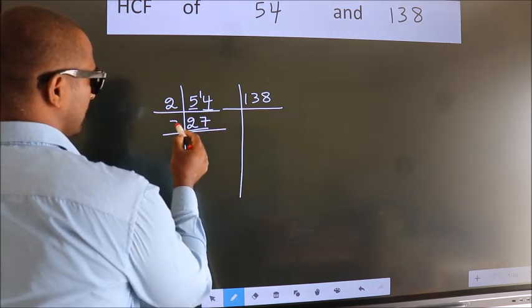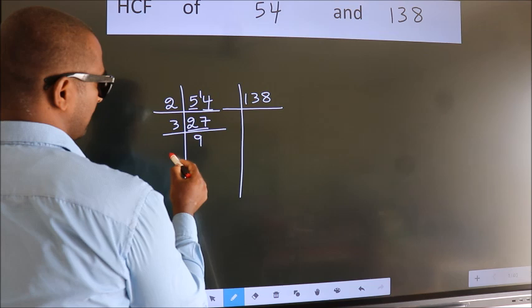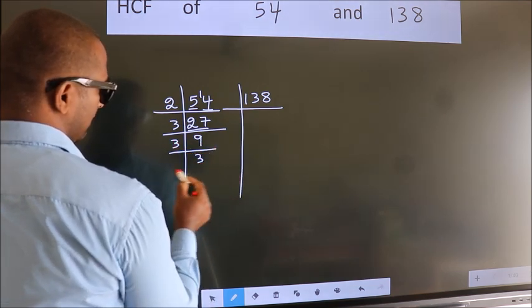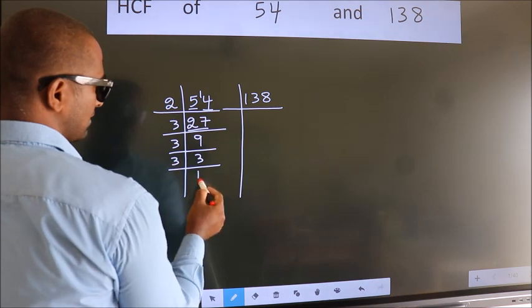Now 27 is 3 times 9 is 27. 9 is 3 times 3 is 9. 3 is a prime number. So 3 times 1 is 3.